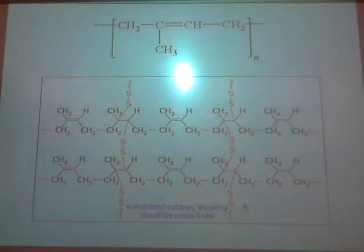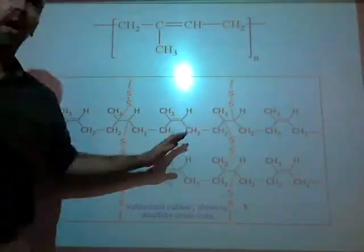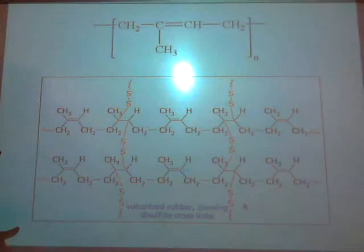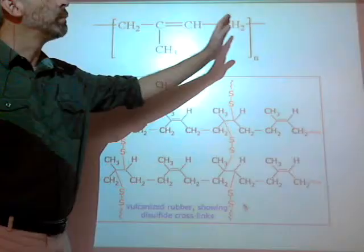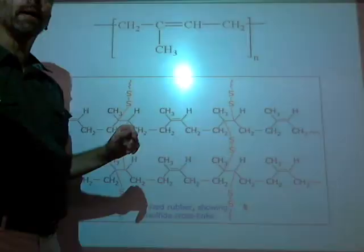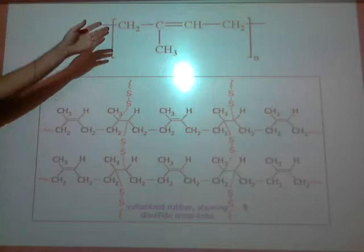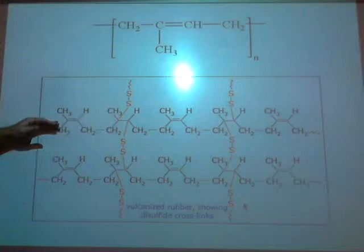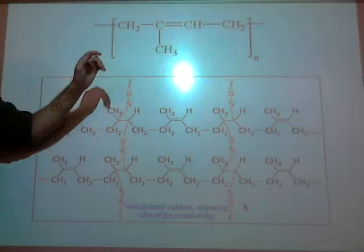A lot of times when you see a polymer, we don't want to draw all of it out. So we generally just draw the one monomer and put a little 'n' after it. That 'n' could be a thousand — it could be in the thousands — and they all just link continually, repeating themselves. Rubber that's not cross-linked isn't very strong, isn't durable, and it's pretty sticky. You add sulfur cross-links and it makes it better — that's vulcanization. That's your first natural polymer.